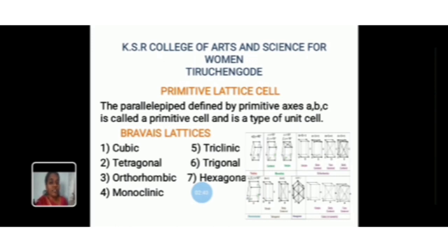Then, Bravais lattice. Bravais showed that only 14 types of space lattices are possible. The 7 systems of axes are sufficient to construct the 14 Bravais lattices. This leads to the classification of all crystals into 7 crystal systems: cubic, tetragonal, orthorhombic, monoclinic, triclinic, trigonal or rhombohedral, and hexagonal. These 7 crystal systems divide into 14 Bravais lattices.